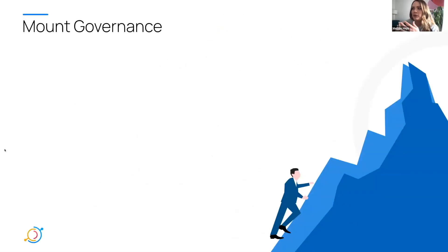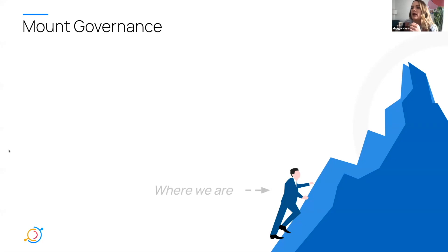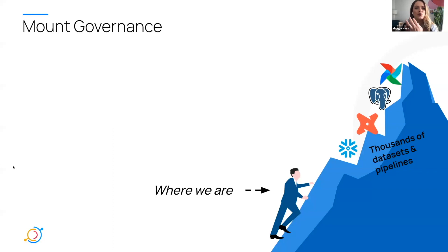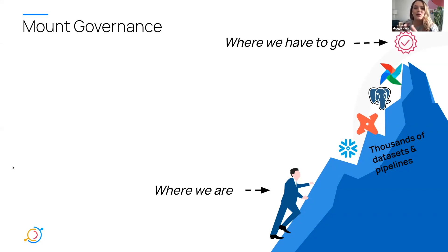The idea is that we are collectively, as a community and as an industry, kind of all at the bottom of this mount governance, and we don't really know how to tackle it. We talk a lot about how to roll out governance programs and what are the key components of governance. But the reality is a lot of us are starting at the bottom of this huge mountain of governance debt. We have thousands, if not hundreds of thousands, of data sets and pipelines that we need to document. And it can be a really daunting task to figure out how you even start.